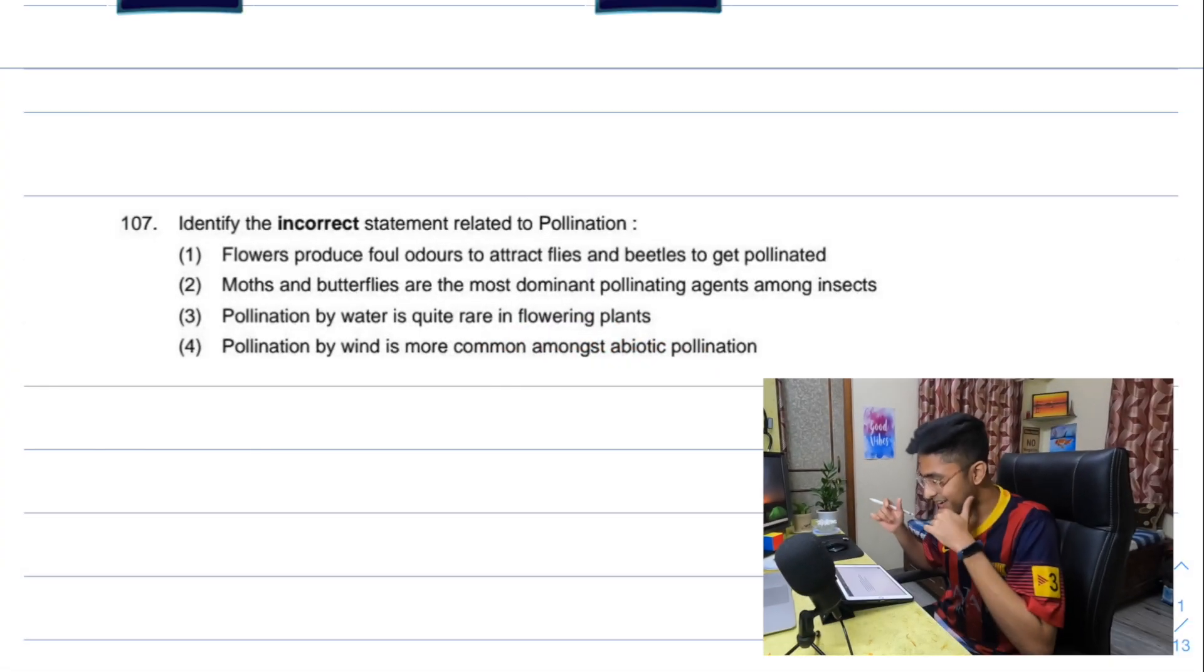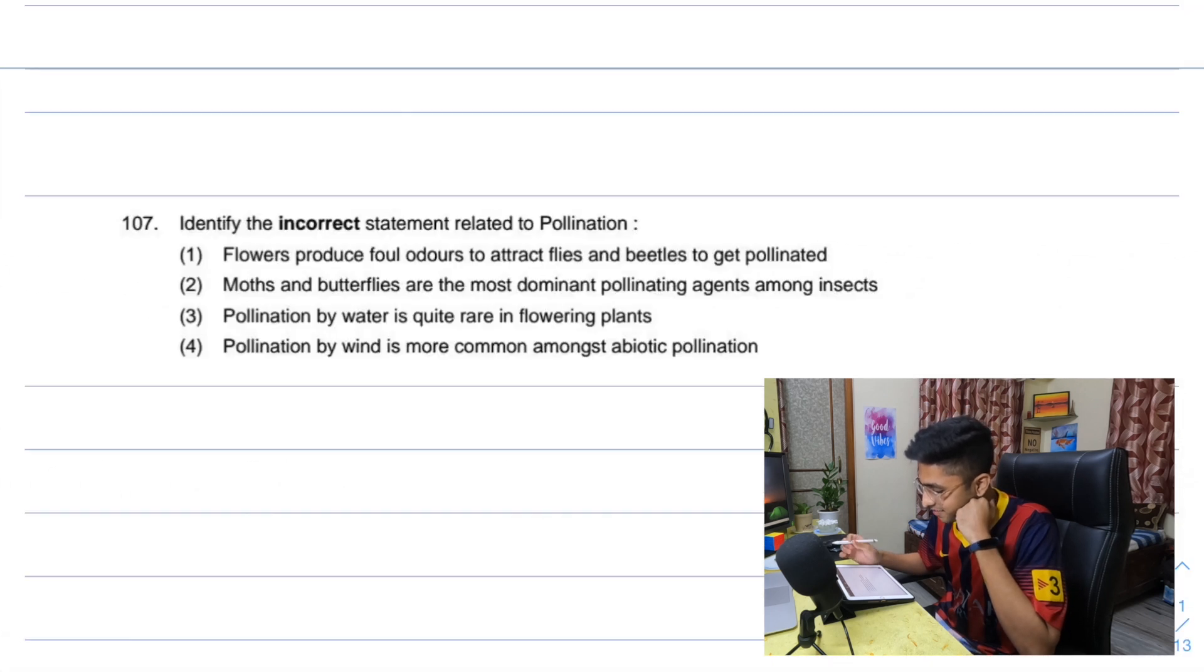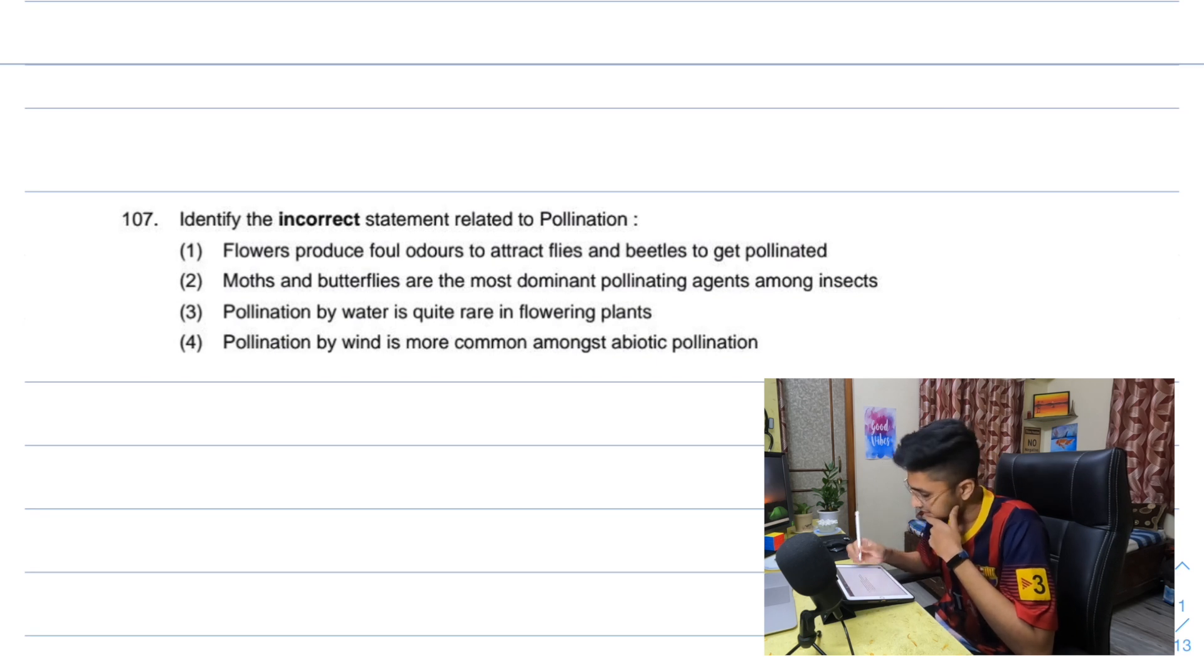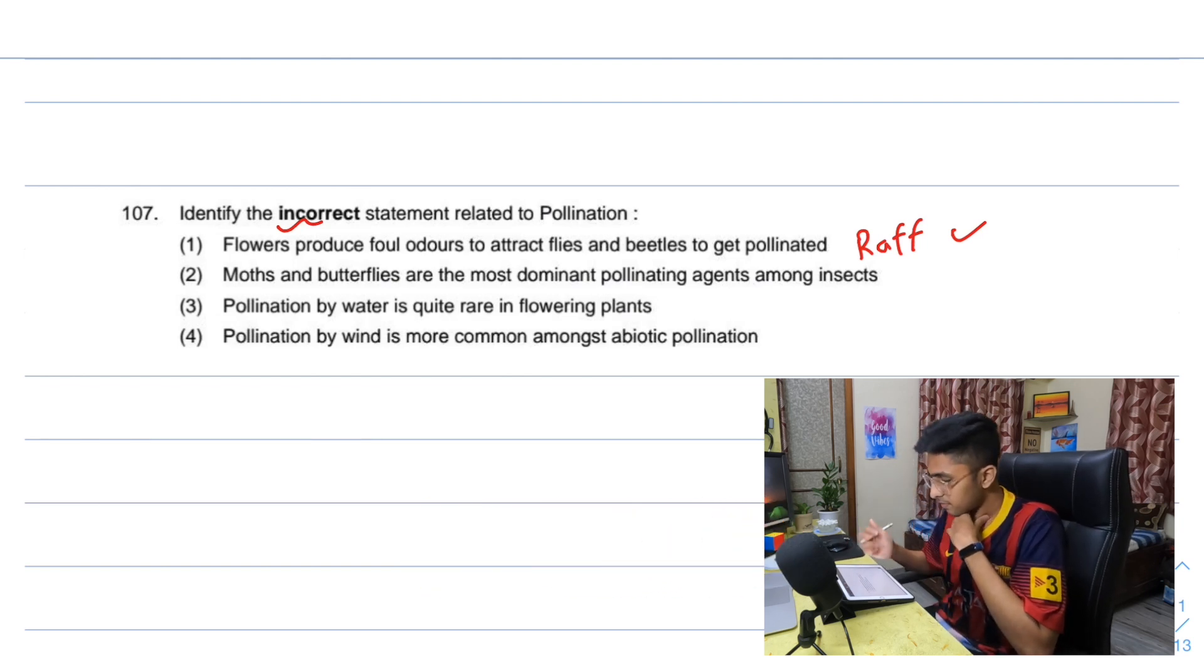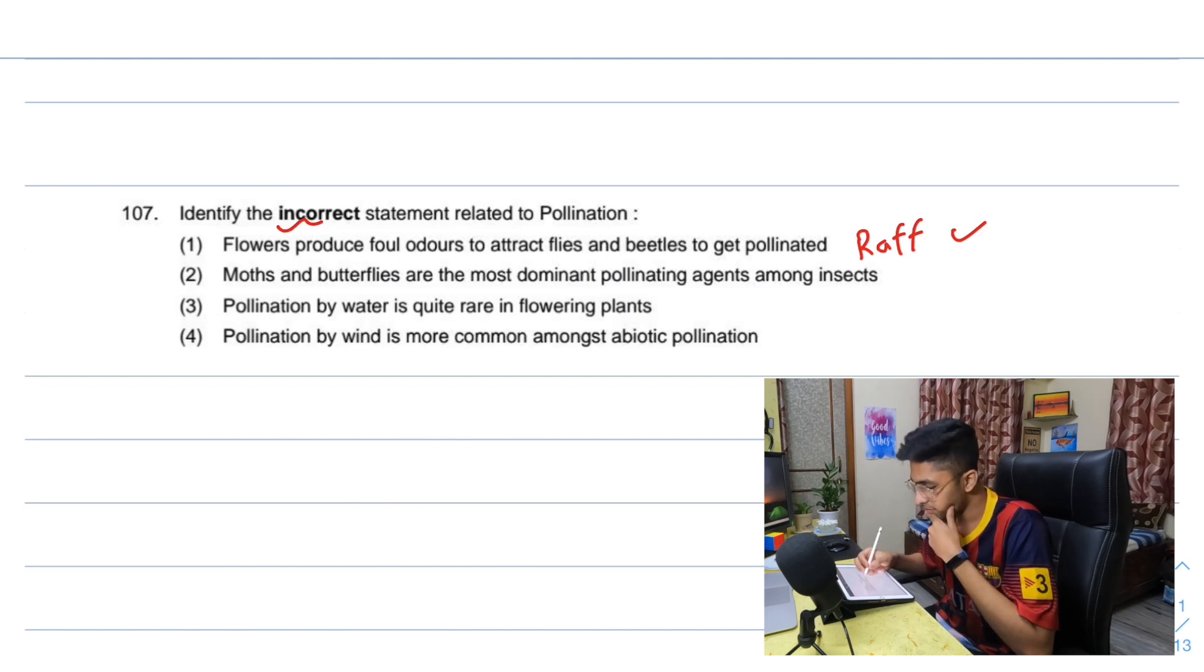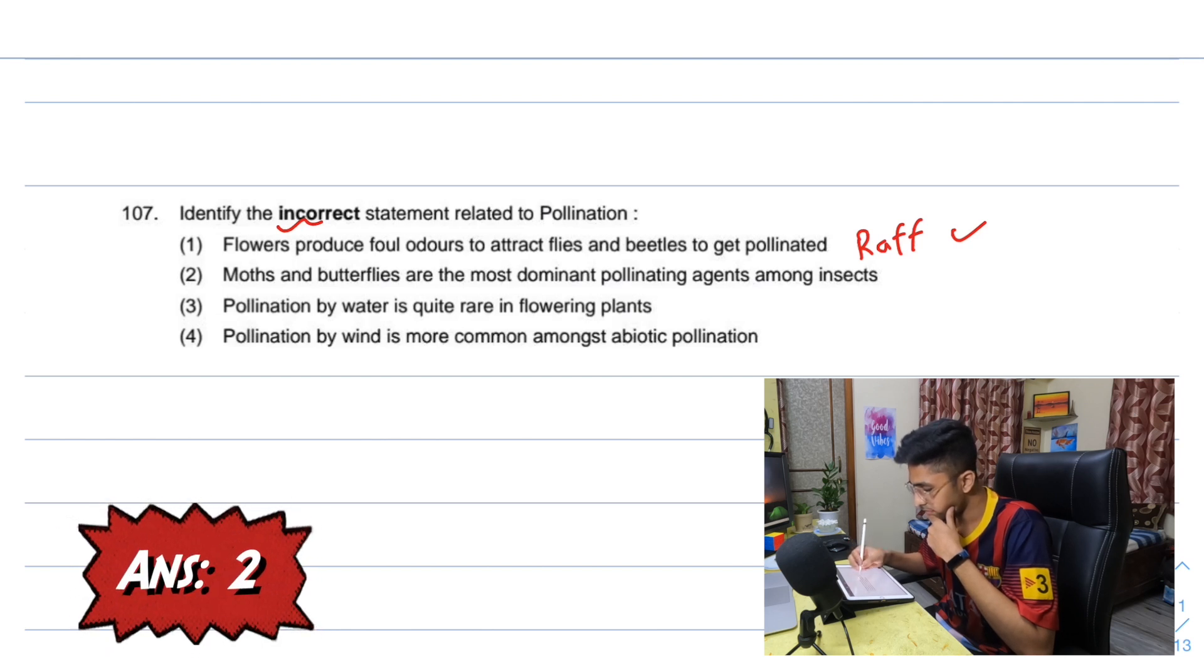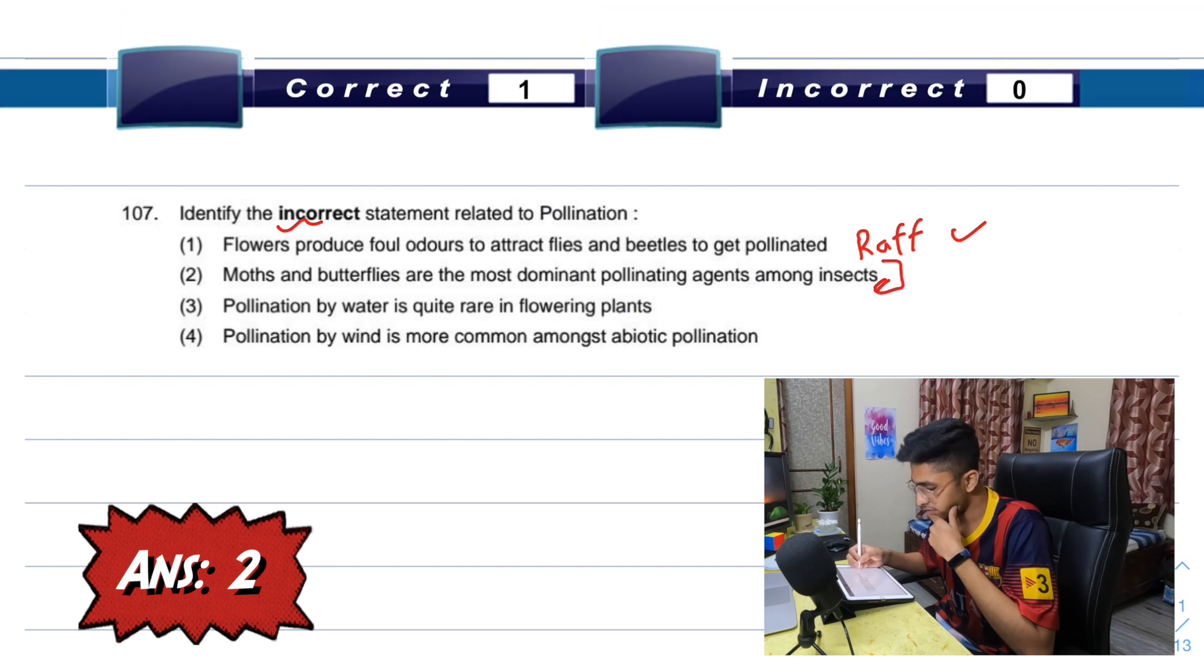First question. Why does it have to be on pollination? Identify the incorrect statement about pollination. Flowers produce foul odor to attract flies and beetles - that's Rafflesia, that's correct. Moths and butterflies are the most dominant pollinating agents among insects. Pollination by water is quite rare in flowering plants. I don't think that happens. Pollination by wind is the most common amongst abiotic pollination. Wind pollination happens. I'm going to go for bees. But bees and butterflies pollinate a lot. I'll still go for this. I would go for bees.